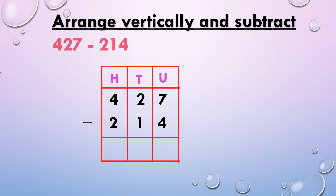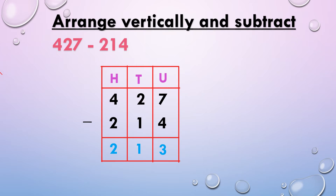Now we subtract, starting from the units place. Units place: 7 minus 4, we get 3. Tens place: 2 minus 1, we get 1. Hundreds place: 4 minus 2, we get 2. So 427 minus 214, we get 213.